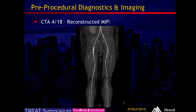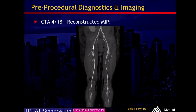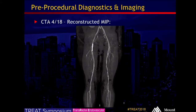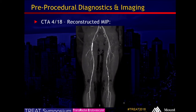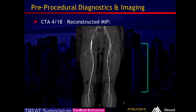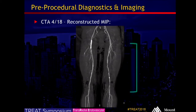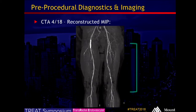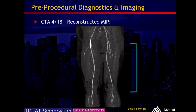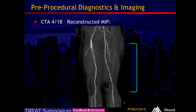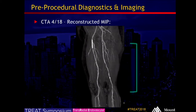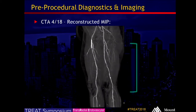Maximal intensity projection images through the CT further delineate her left SFA disease. We have a little bit of proximal SFA disease, but it looks like most of the disease is lower down, mid to distal.